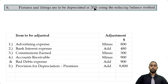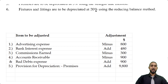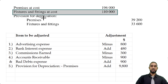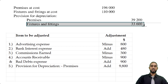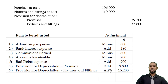Item six says fixtures and fittings are to be depreciated at 20% using the reducing balance method. Under the reducing balance method, we multiply the depreciation rate by the net book value — that is, the cost of the asset minus the existing depreciation. Fixtures and fittings at cost is $110,000, and the corresponding provision for depreciation is $33,600. Subtracting gives us $76,400, and 20% of that is $15,280. That of course is added to the provision for depreciation for fixtures and fittings.